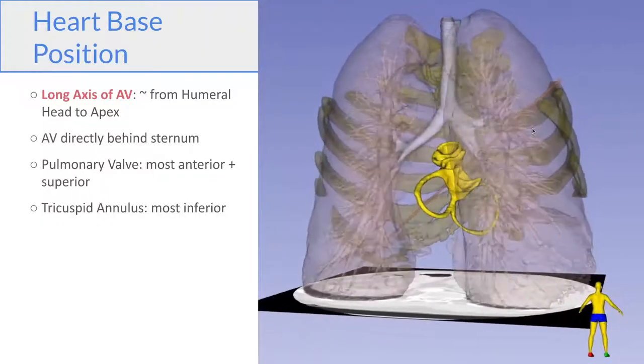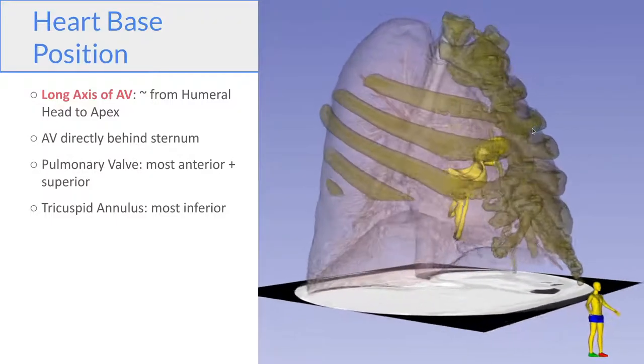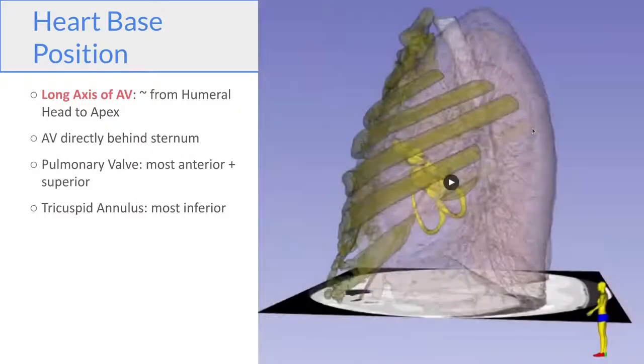So once we've rotated the heart base into the right configuration, so the long axis of the LV goes from the right humeral head to the apex, the next is to actually locate this properly in the chest.